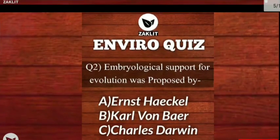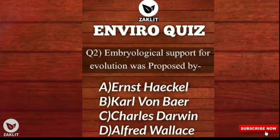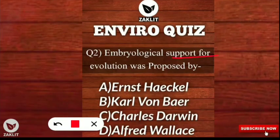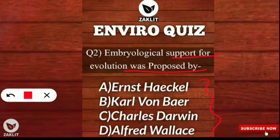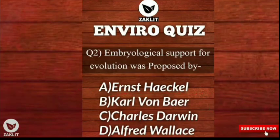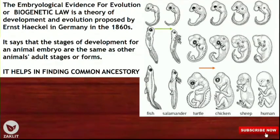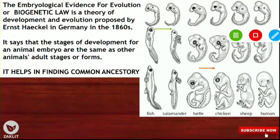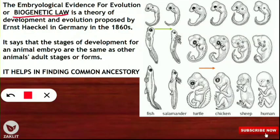Let's move to question number two. The question was: embryological support for evolution was proposed by which scientist? The correct option is A — this was supported by Ernst Haeckel. Ernst Haeckel, who also gave the term 'ecology,' supported embryological evidence for evolution. This embryological evidence is also known as the biogenetic law, a theory proposed by Ernst Haeckel in the 1860s.